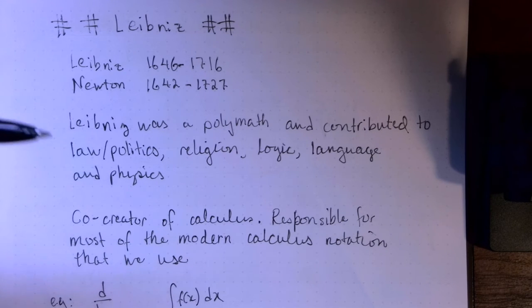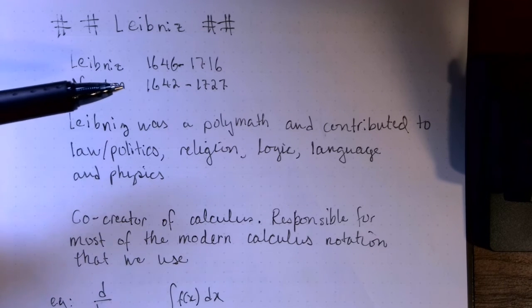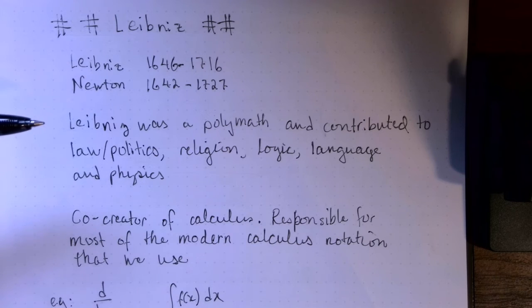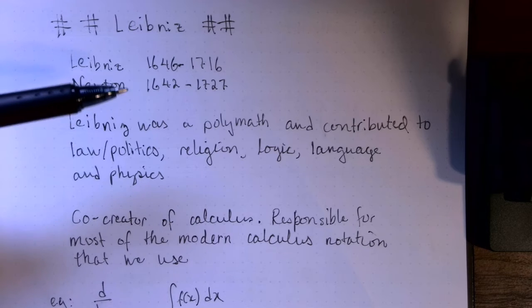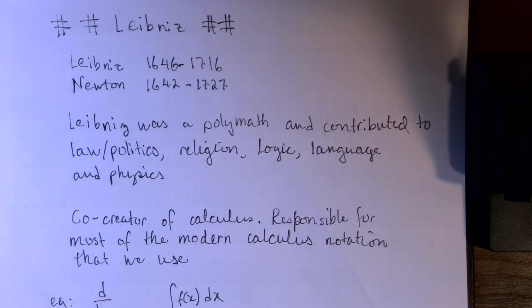So what we've got here are the year of birth and death for both Leibniz and Newton. And you can see their lives kind of overlap. Newton was born a little earlier and died a little bit later. So they were active around the same time.